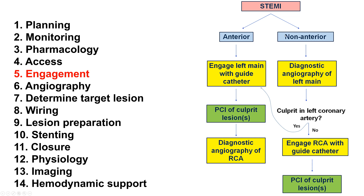However, if it's a non-anterior MI like in this patient, we first prefer to do an angiogram of the left main, because first of all, it could be a circumflex causing the inferior MI. But if not, if there's significant left main disease or three-vessel disease, that might affect how we do PCI of the culprit lesions.